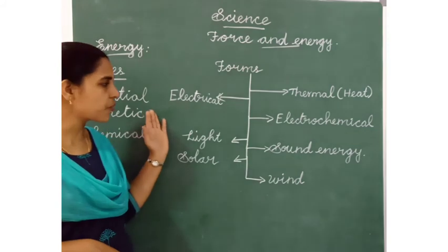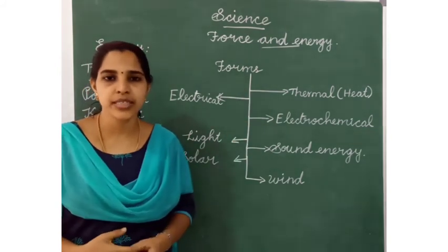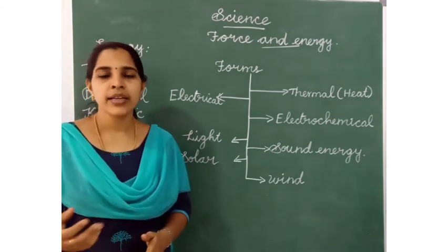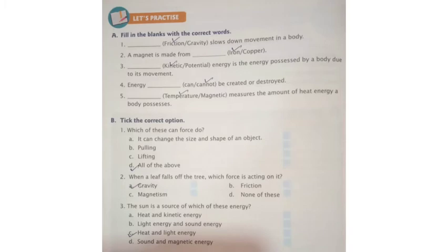How did you understand the different types and forms of energy? Now we will do some exercises from the book and workbook. Take your student's book, page number 122. Let's practice. Question A — fill in the blanks with the correct words. Question 1: Friction slows down movement in your body. Question 2: A magnet is made from iron. Question 3: Kinetic energy is the energy possessed by a body due to its movement. Question 4: Energy cannot be created or destroyed. Question 5: Temperature measures the amount of heat energy a body possesses.